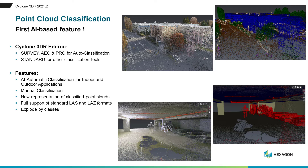Cyclone 3DR users are going to benefit from machine learning automatic classification capacity. Five new features are delivered: first, automatic classification for indoor and outdoor applications; the manual capacity to classify and sort the data of one point cloud; a new representation to display classified point clouds; LAS format is now fully supported for import and export via Cyclone 3DR; and finally, an export-by-classes tool is available within the product.